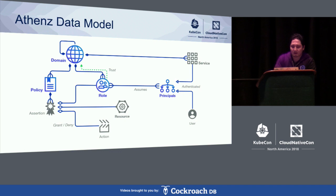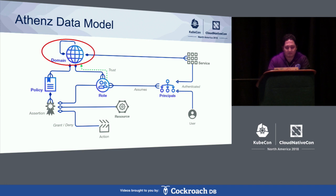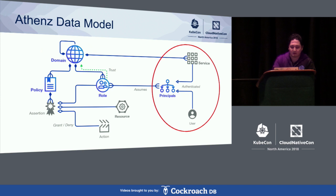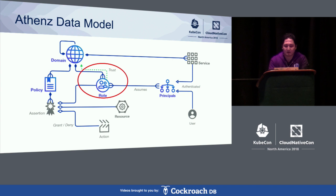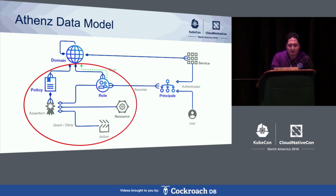The second feature is to support authorization. In order to do authorization in Athens, I'd like to explain the four main words in Athens' data model. The first one is domain. A domain is a namespace to separate other entities into different scopes. The second one is principal. Principals can be users or services that are authenticated. Then, we gather principals into roles. Every domain has an admin role inside by default, and only the members of the admin role can modify the domain's entities. Lastly, we can create policies. A policy is a set of assertions that can be defined to grant or deny any particular action to a certain role on a specific resource.